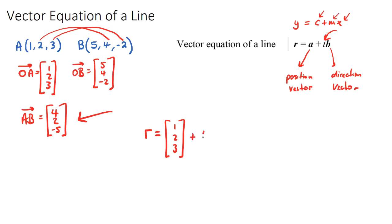Plus, and we leave the T as our variable, just like we had X, and we put our direction vector, which will be AB, 4, 2, negative 5. So this is it.